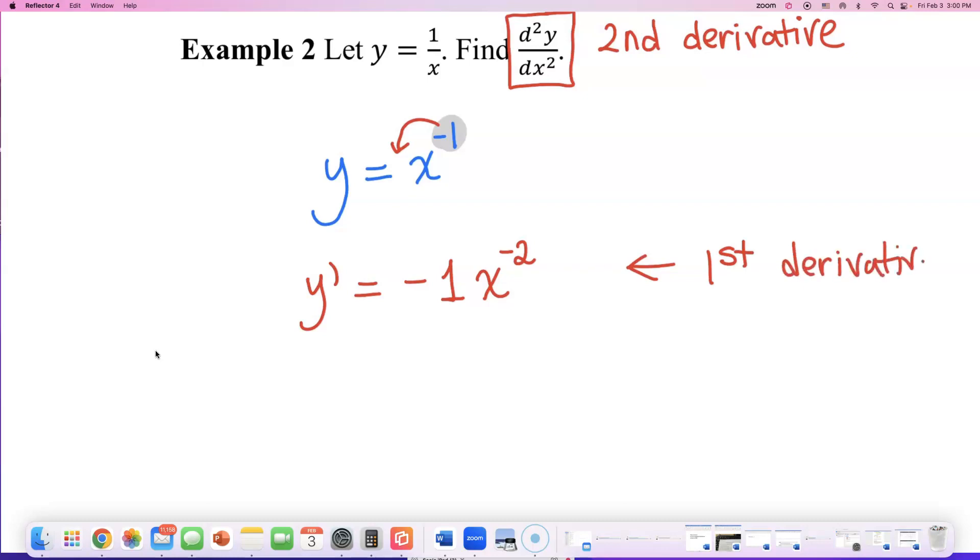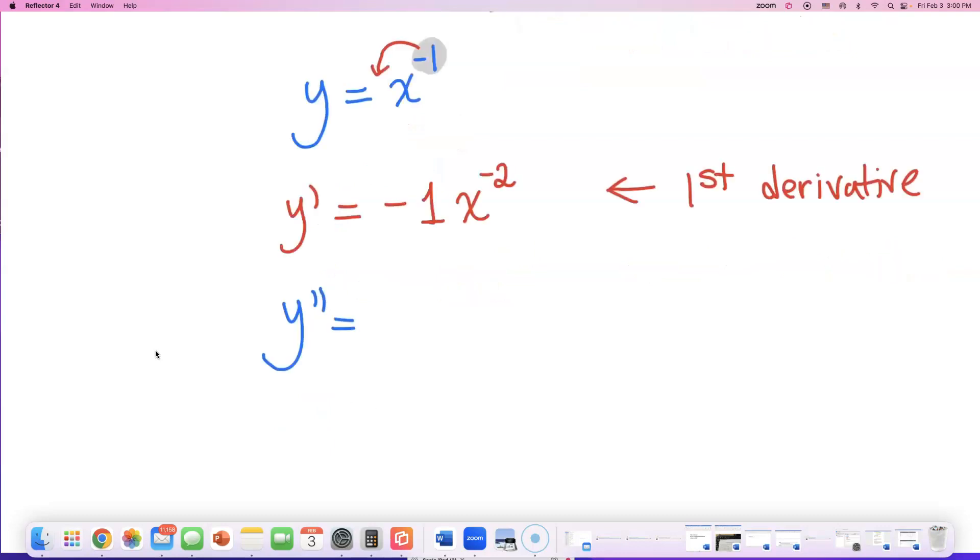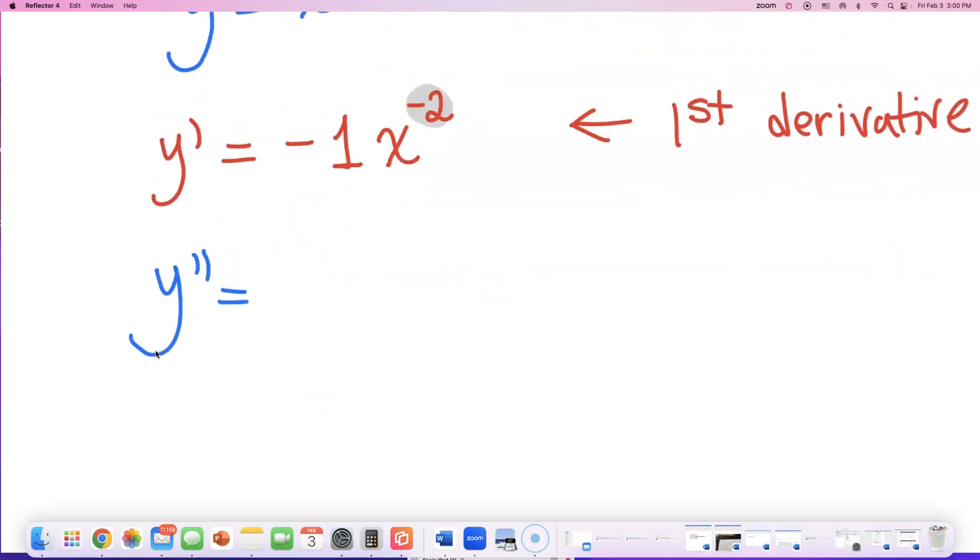This was the first derivative. Let's find y double prime this time. So bring down, this time bring down the exponent of what? Negative 2.